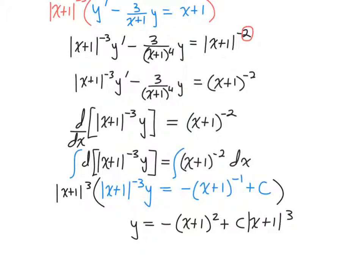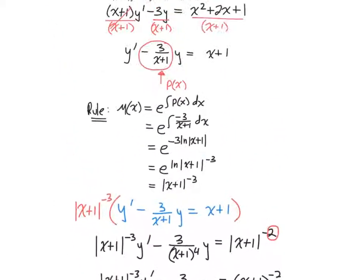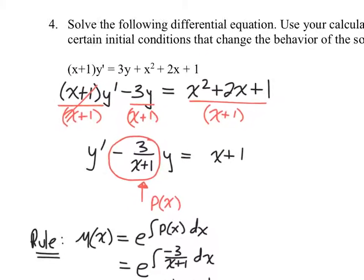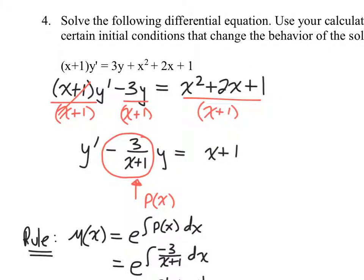For the first step where you find p of x, when I first did it, I left it, like, x plus 1 times y prime minus 3y, and then you said negative 3 was p of x. Could that also work? Or, like, I know it's probably going to be a lot more work than you did here. Yeah, so it will, you might have to do more algebra along the way, but it'll get you there.